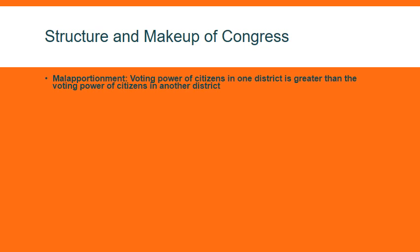Malapportionment means the voting power of citizens in one district is greater than the voting power in another district. The smaller your state, the more say you have in the process — especially when it comes to running for president. That's why presidential candidates campaign heavily in Iowa, New Hampshire, and South Carolina but not so much in California. In California, because we have so many people, your vote counts, but your voice is not as loud as somebody in Wyoming or Iowa.